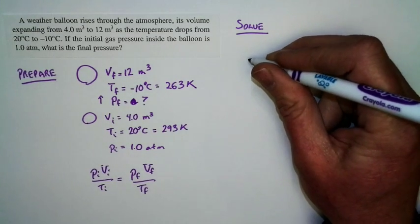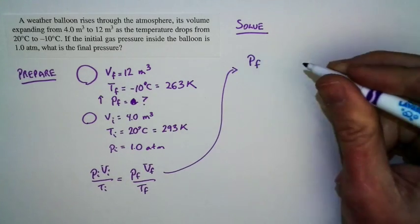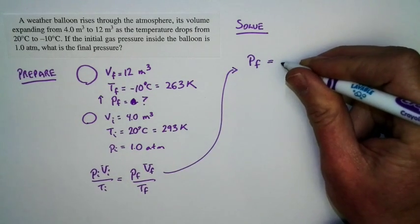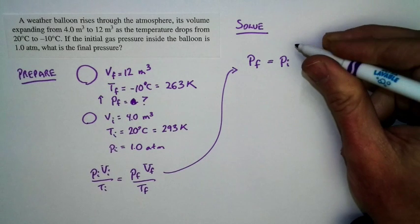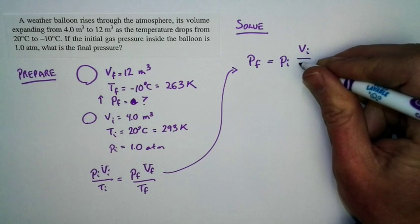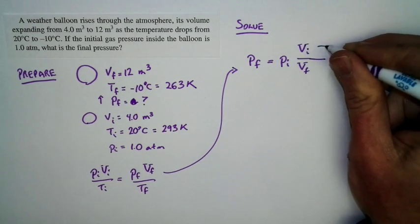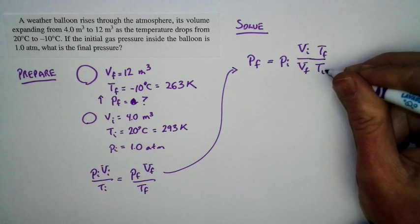I'm looking for the final pressure. I can just rearrange this relationship. I'll rewrite it this way. The final pressure is just equal to the initial pressure times Vi over Vf and then times Tf over Ti.